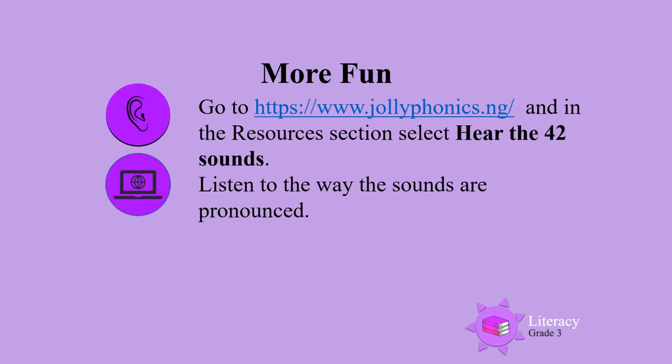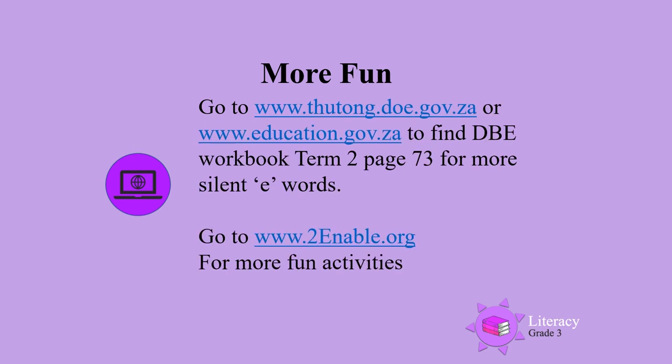For more fun, go to the Jolly Phonics website and in the resources section, select 'Hear the 42 sounds' and listen to the way the sounds are pronounced. You can also go to the DBE website and find the DBE workbook, term 2, page 73, for more silent E words. Go to www.toenable.org for more fun activities.